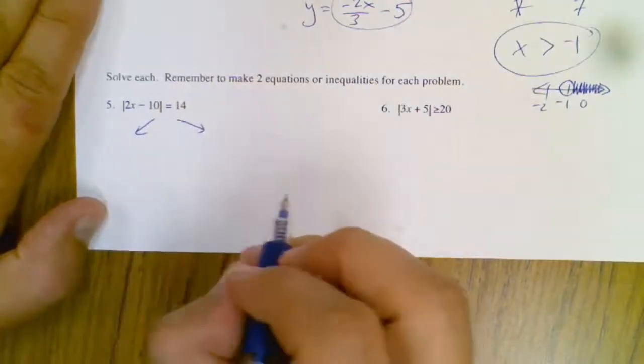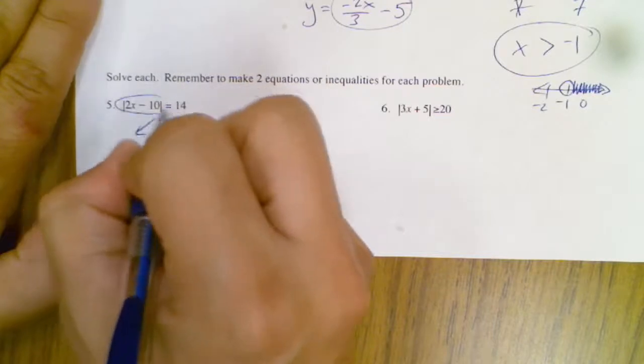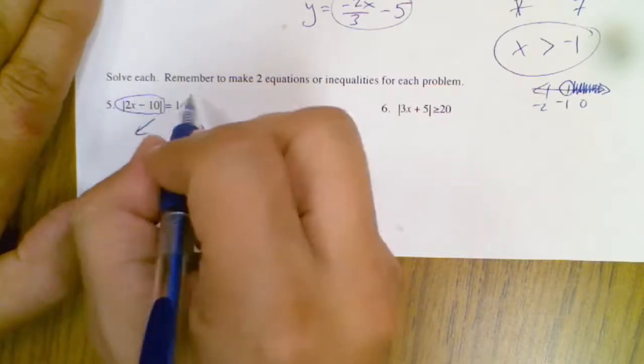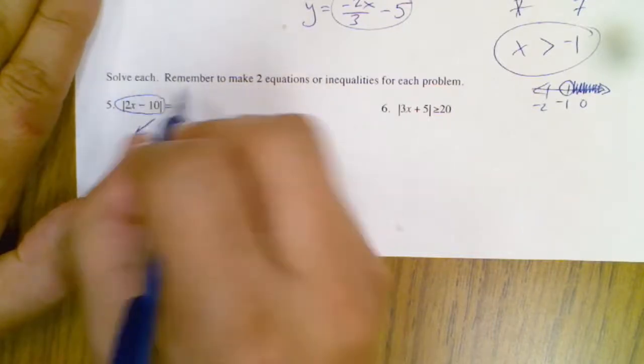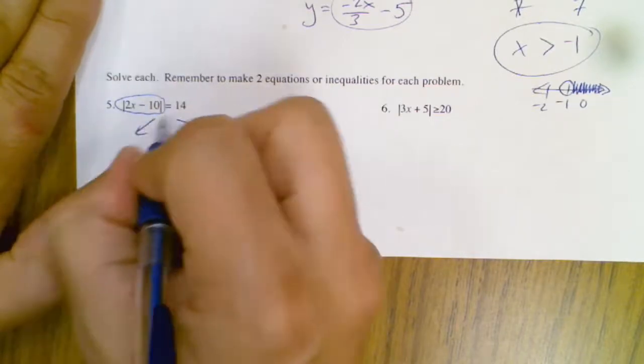Now if this wasn't alone, you would have to like undo stuff. Like if there's a plus 5, your first move would be to undo it. The only time you can split it is once the absolute value is by itself or isolated.